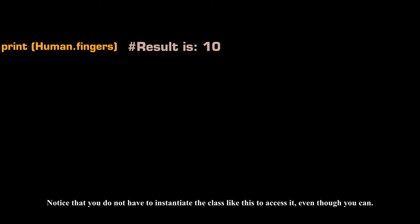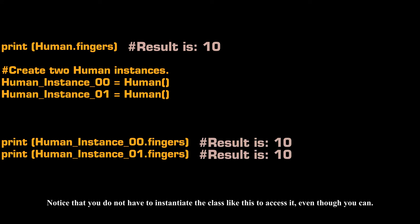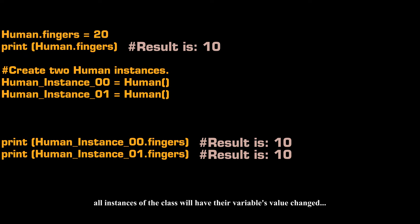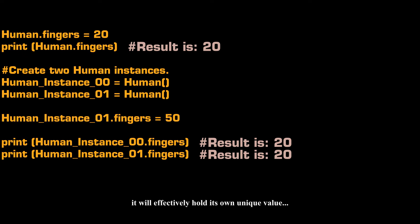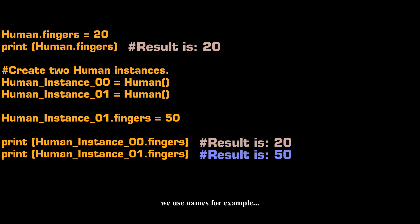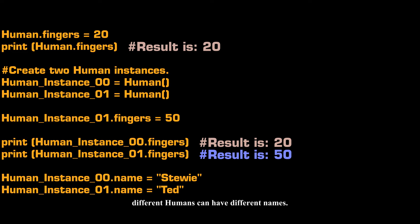This is how you access the variable from outside the class. Notice that you do not have to instantiate the class to access it, even though you can. Here is an interesting note: if you change the variable's value directly on the class, all instances of the class will have their variable's value changed. However, if you update it using an instance of the class, it will effectively hold its own unique value, and other instances will not be affected. It is also through this mechanism that you can assign unique values — like names — to different instances of the same class.